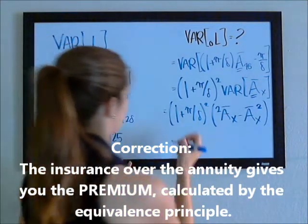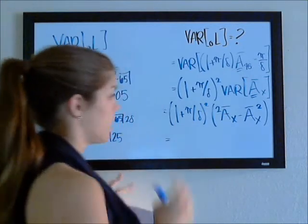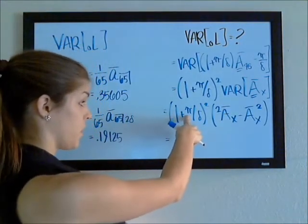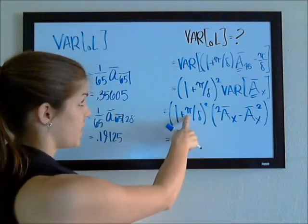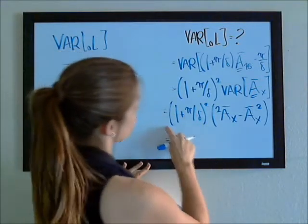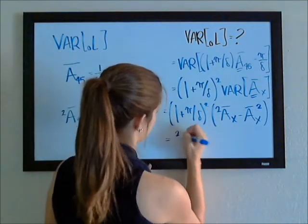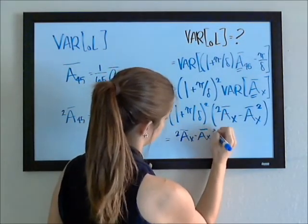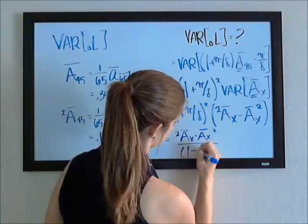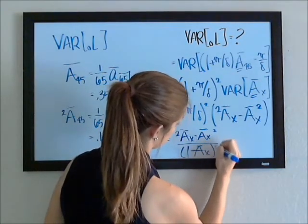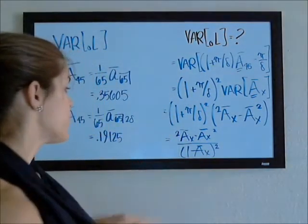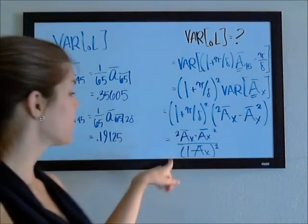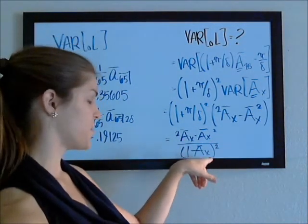It also works out, if you just go ahead and plug in the insurance over the annuity for the premium here, and rewrite the annuity in terms of the insurance, this whole thing works out,